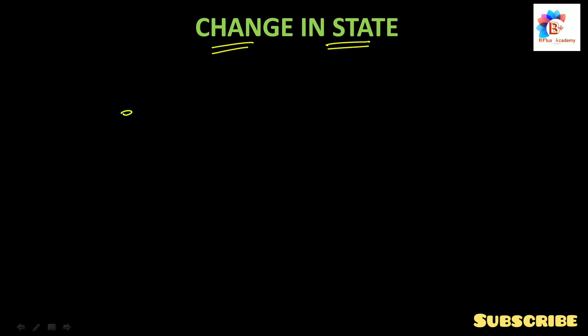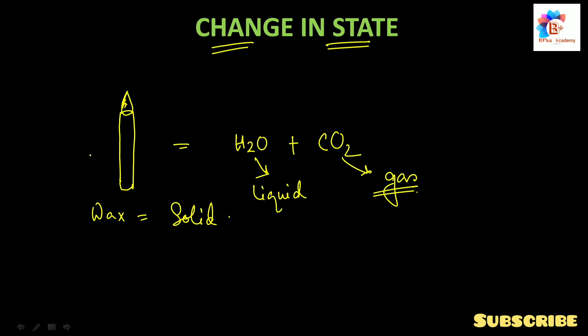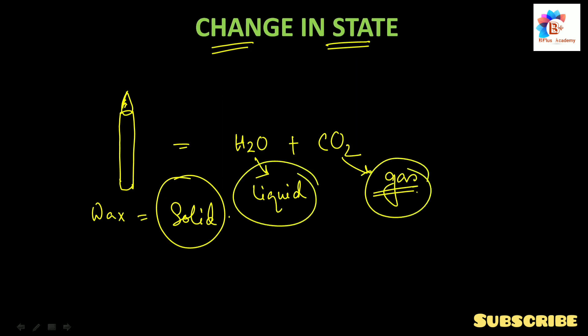The last characteristic we will learn about is change in state. When we burn wax in the form of a candle, the wax burns and produces water and carbon dioxide. Wax is a solid, water is a liquid, and carbon dioxide is a gas. So we have seen how through chemical reactions, a solid changes to produce liquid and gas — that is how state changes occur in chemical reactions.